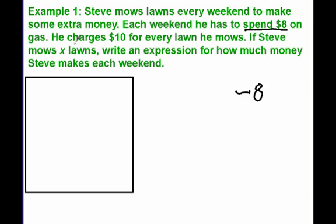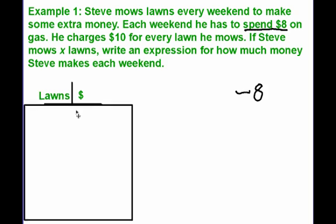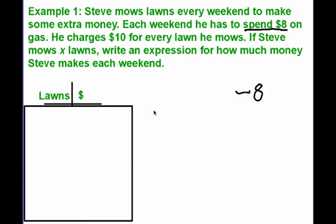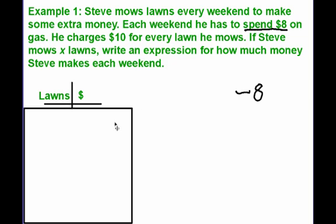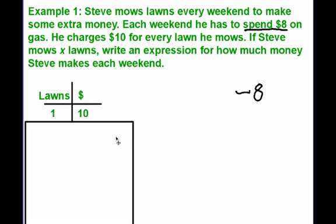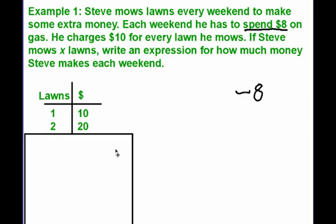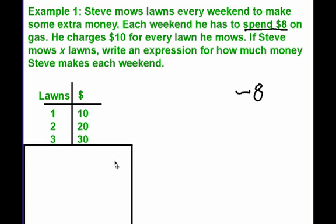He charges $10 for every lawn he mows. It might help to make a little chart comparing the number of lawns and the amount of money Steve makes. If it's $10 for every lawn he mows: one lawn makes $10, two lawns makes $20, three gives him $30, four gives him $40, and so on.